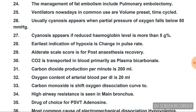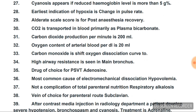Cyanosis appears if reduced hemoglobin is more than 5 grams percent, and PAO2 should be less than 50 mmHg. Earliest indication of hypoxia is change in pulse rate. Aldrete scale score is used for post-anesthesia recovery. Carbon dioxide is transported in blood primarily as plasma bicarbonate. CO2 produced per minute is 200 mL. Oxygen content of arterial blood per deciliter is 20 mL.